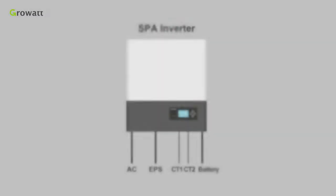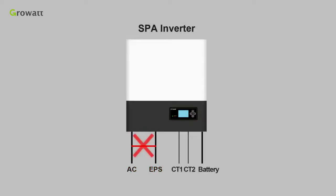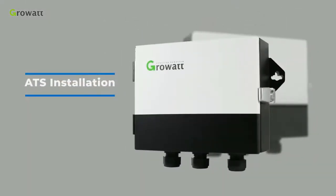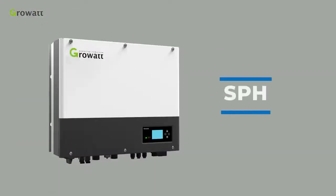In SPA system, EPS terminal can't connect to grid. If you want to use on-grid and off-grid together, you can use ATS, Automatic Transfer Switch device. For the detail of ATS installation, please refer to SPH video.